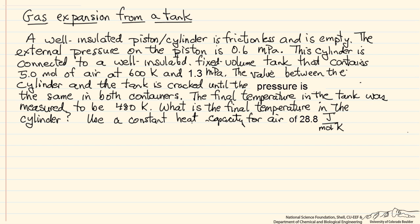In this problem we have a well-insulated piston and cylinder that's empty, and we have pressure on this cylinder of 0.6 megapascals. The cylinder is connected to a fixed-volume tank that's also well insulated. There are 5 moles of air in the tank with given pressure and temperature. The valve between the cylinder and the tank is cracked until the pressure is the same in both containers.